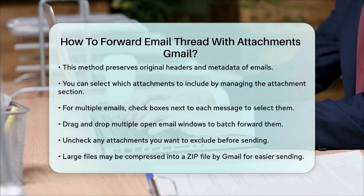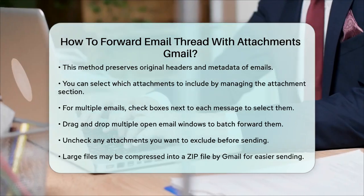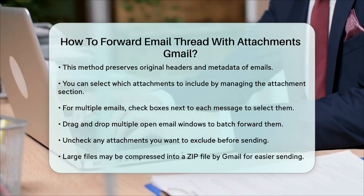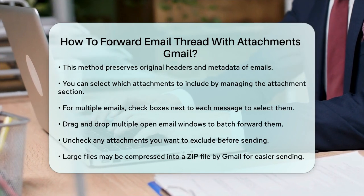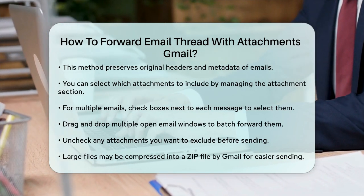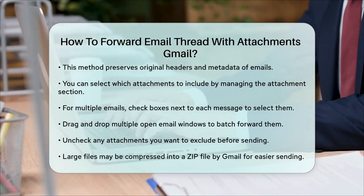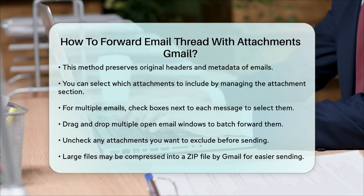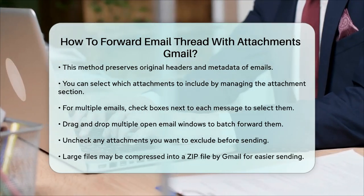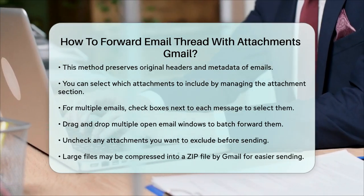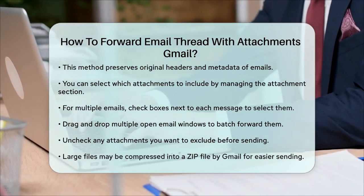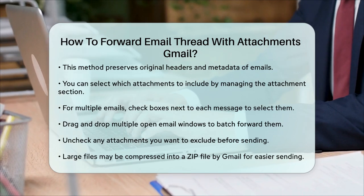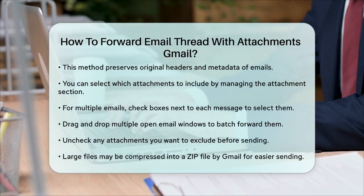If you need to remove any attachments, simply uncheck them in the Attachments section before sending. For large files, Gmail might automatically compress them into a zip file to make it easier to send. By following these steps, you'll be able to forward entire email threads along with their attachments efficiently and accurately in Gmail.